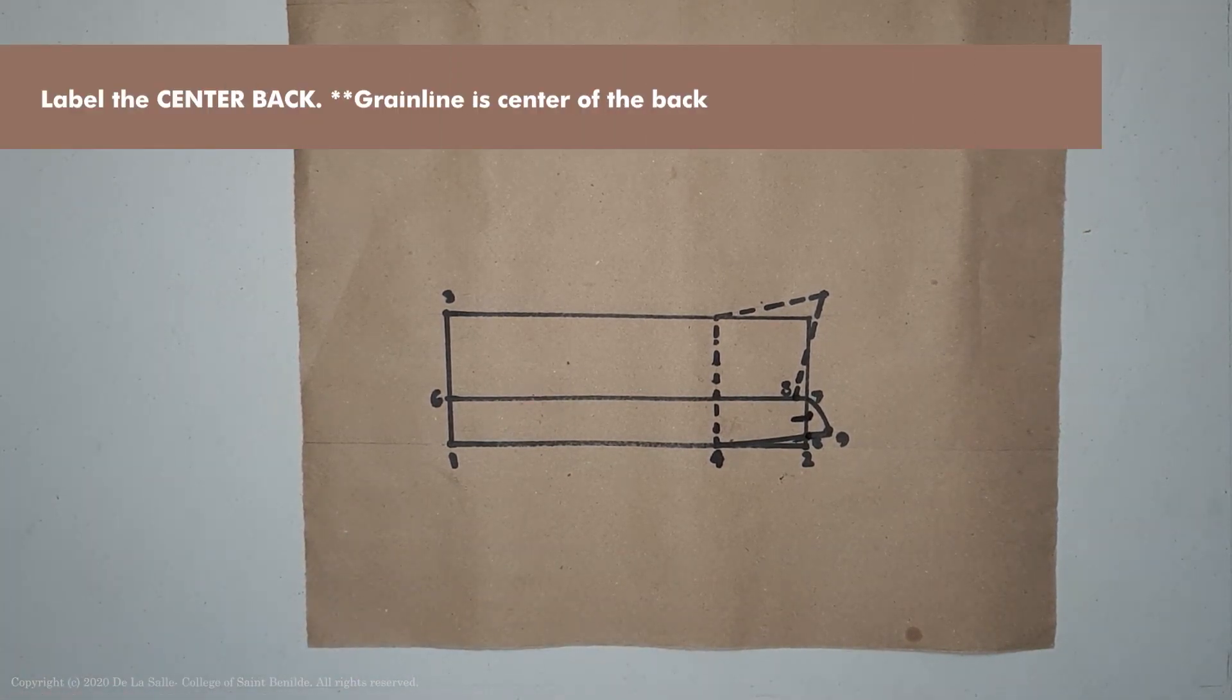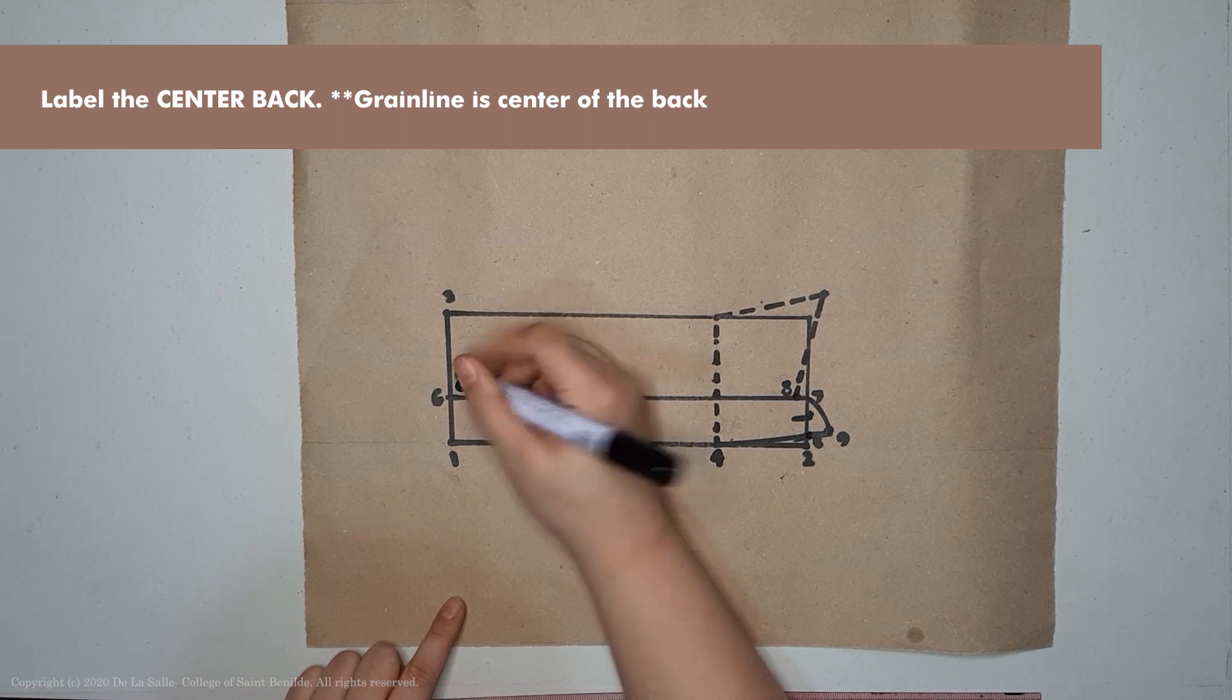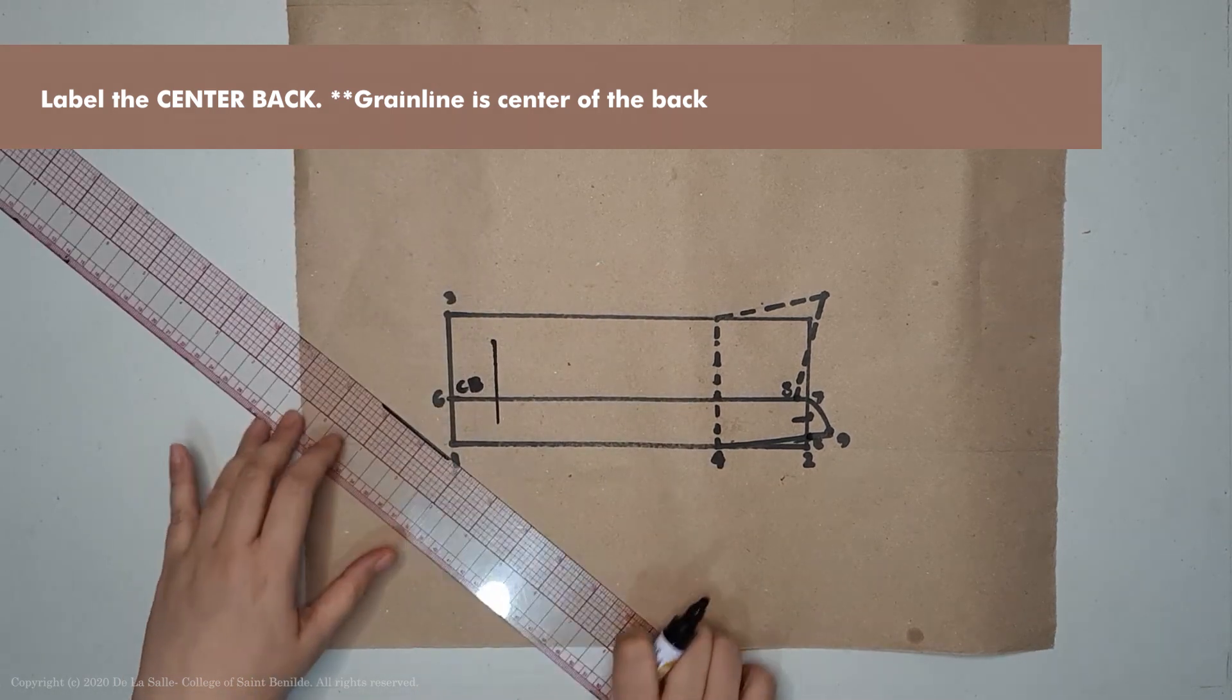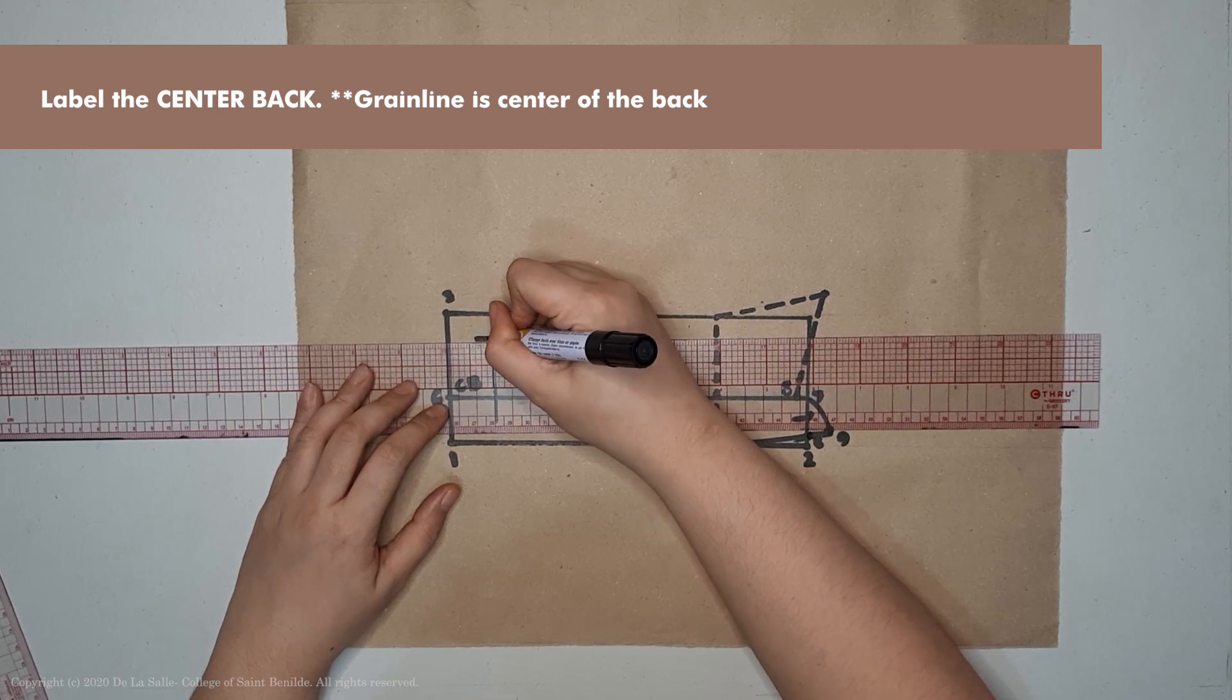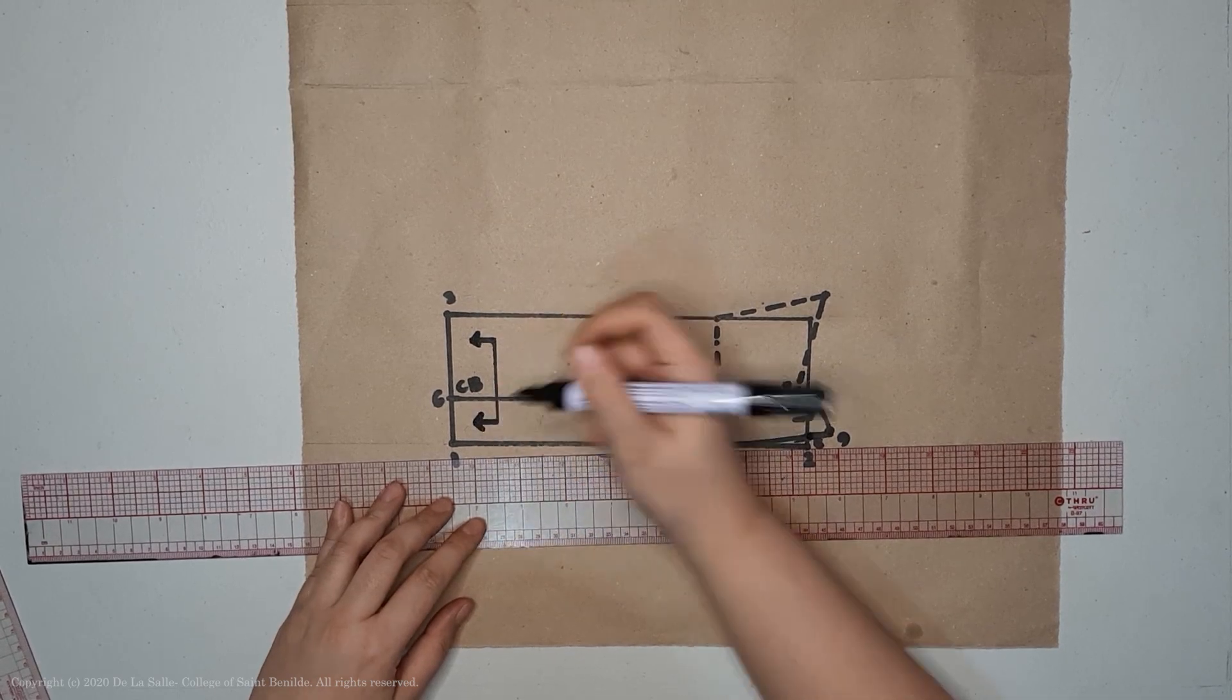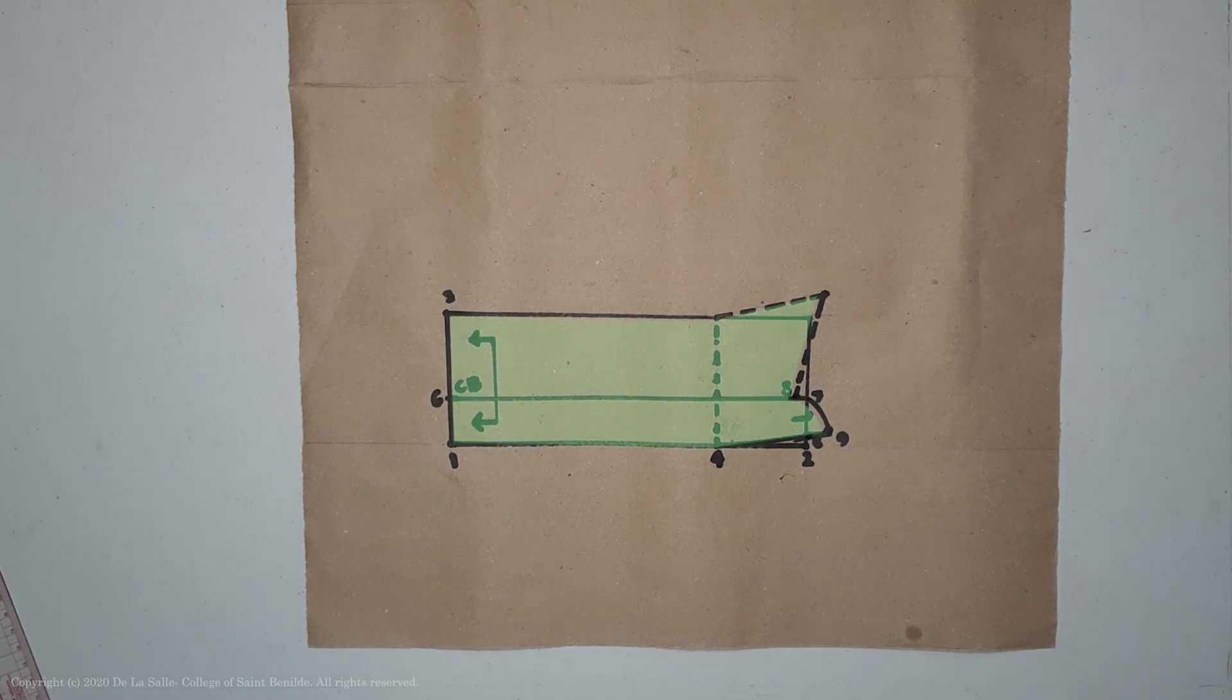Don't forget the label. The center back will be on fold, so mark your fold line. Then mark this as shirt collar or one-piece collar. And that's your collar.